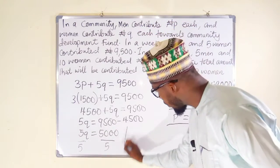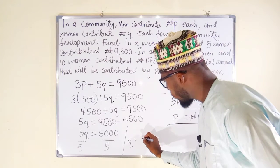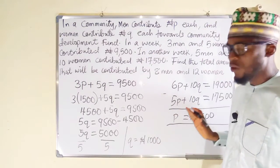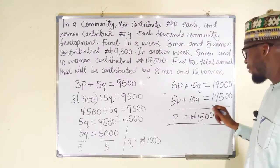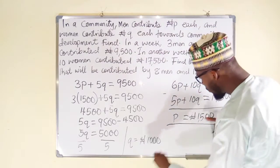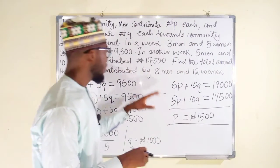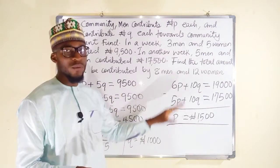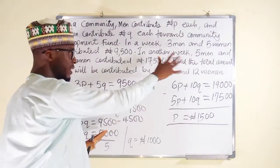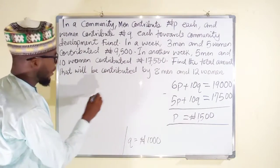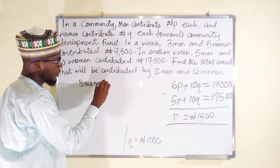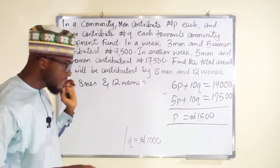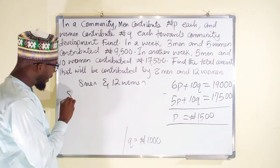5,000 divided by 5 is 1,000, and the 5s cancel leaving only Q. So Q equals 1,000 naira, meaning each woman contributed 1,000 naira, and each man contributed 1,500 naira. We can now use this information to solve the original problem, since we are asked to find the total amount contributed by 8 men and 12 women.